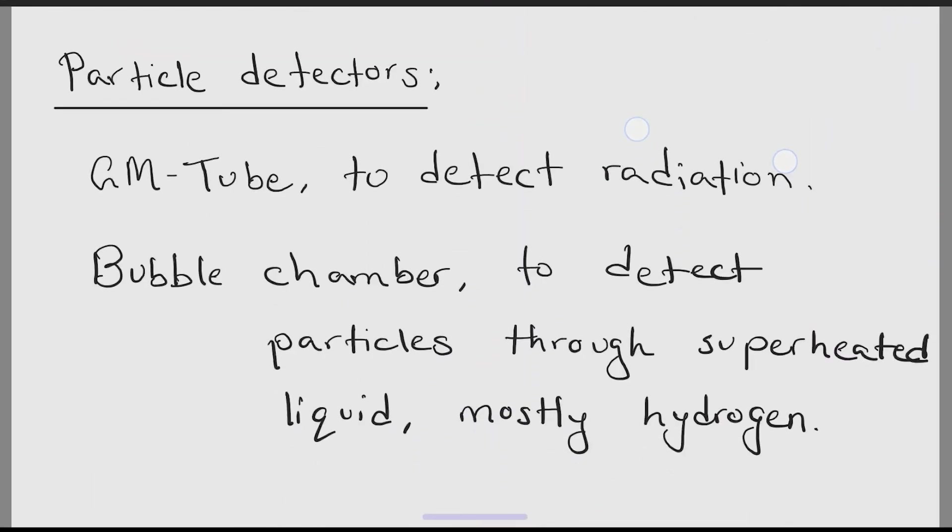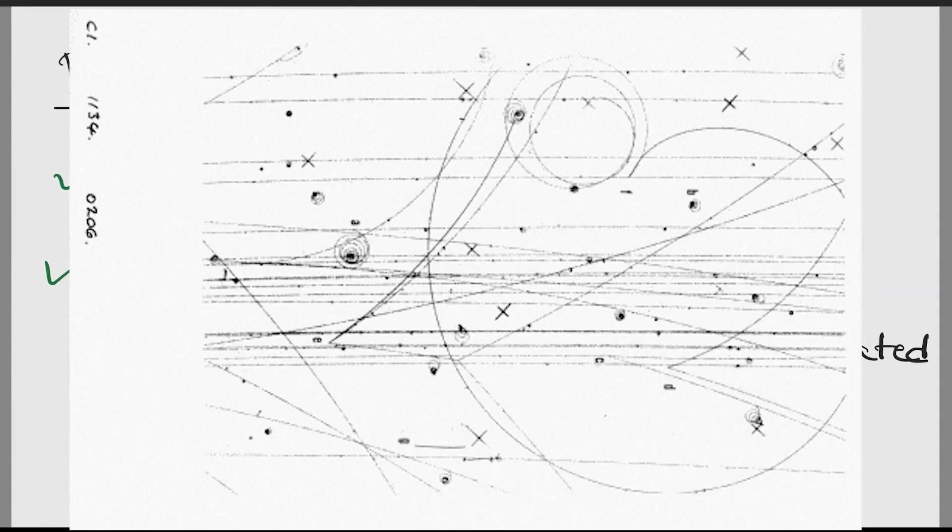Some important well-used particle detectors are GM tube to find radiation, bubble chamber to detect particles. Inside the bubble chamber, we can see traces of the charged particle.